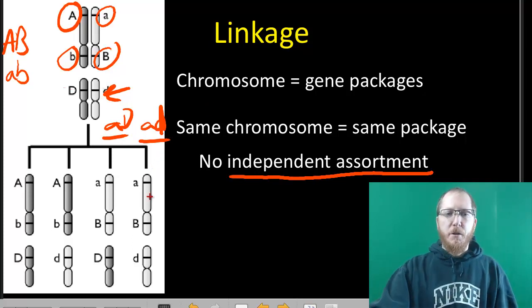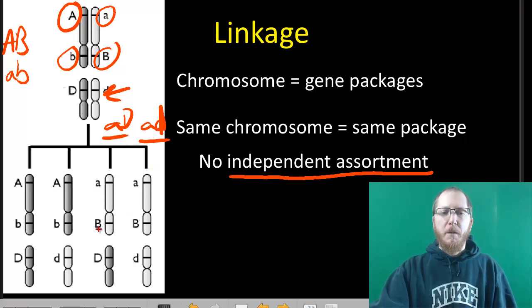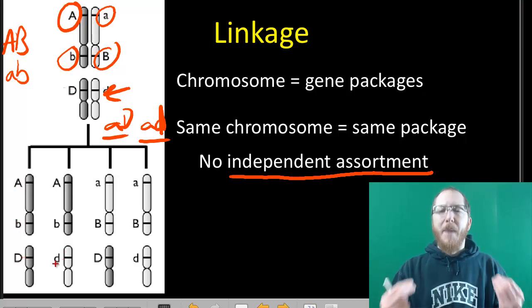And you can see that down here below where you can have this first chromosome with little a big B. It can be with either of the Ds, but notice it's still always little a big B. And the same thing if we get the other chromosome, we always get big A little B. But once again, it can be with either D. It doesn't matter.